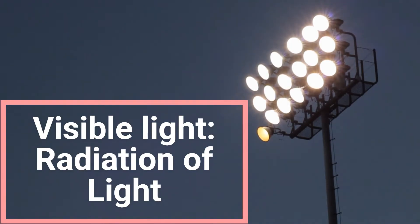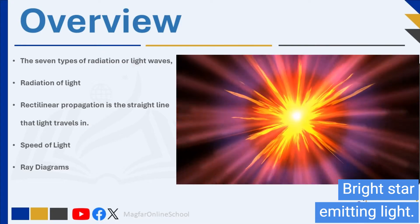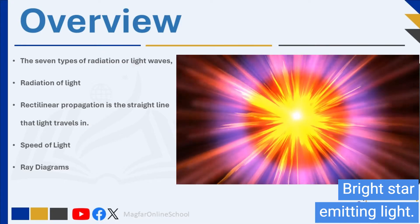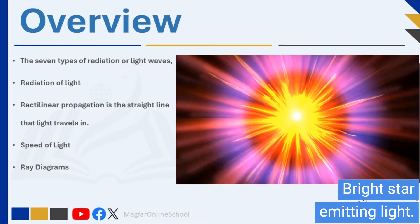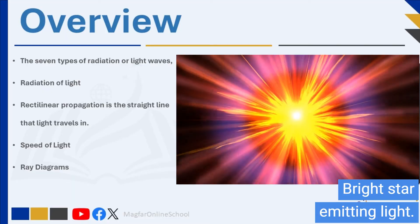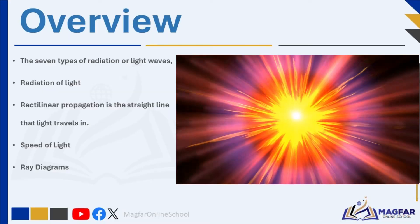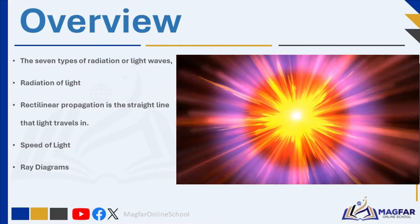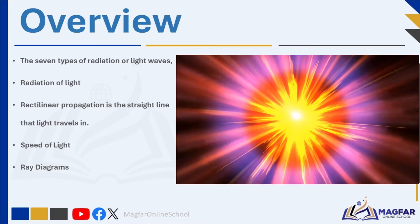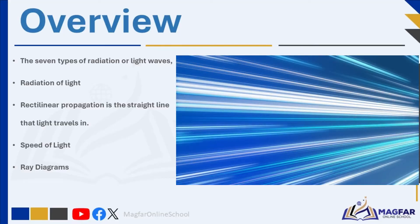Welcome! Today we're embarking on a luminous journey to uncover aspects about light and radiation. First up, let's explore the spectrum of the seven types of radiation or light waves. Delving deeper, we will discover the radiation of light itself — how does it illuminate our world? Straight as an arrow, light streaks through space. The pathway that light takes as it moves is known as rectilinear propagation.